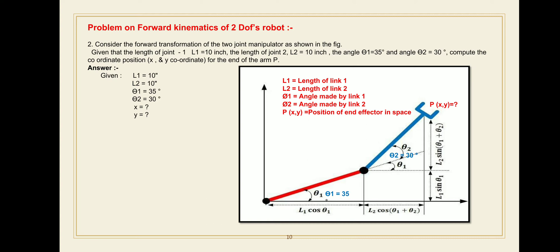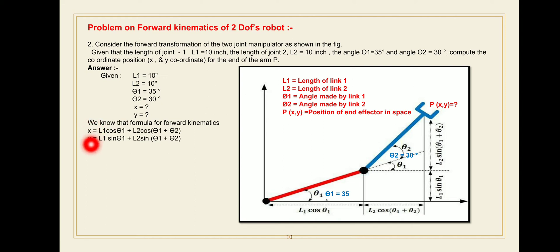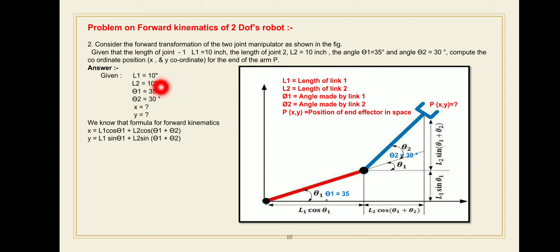Before solving, we recall the formula for forward kinematics of a 2 degrees of freedom robot — already covered in the previous lecture on how to derive forward kinematics of a 2-DOF robot. X and Y are both Cartesian space parameters. X is equal to L1 cos(theta 1) plus L2 cos(theta 1 plus theta 2). This is the equation to find the X Cartesian coordinate. For Y: Y is equal to L1 sin(theta 1) plus L2 sin(theta 1 plus theta 2). This is the equation for the 2 degrees of freedom robot.